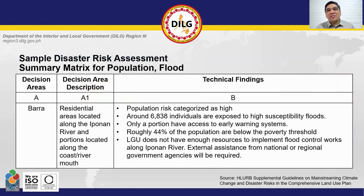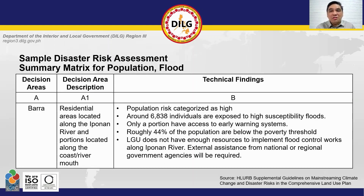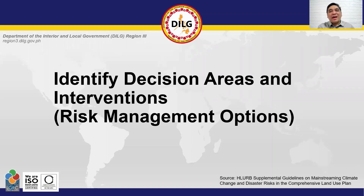By evaluating the risk scores of each barangay, you will be able to identify which areas or barangays are the most at risk to a certain hazard — this is where you select the decision areas. From this, create a disaster risk assessment summary matrix by identifying the barangay, exact location, description of the area, and the technical findings based on previous analysis. Then identify decision areas and interventions, which will be included in the summary matrix in step six.